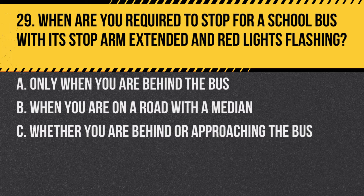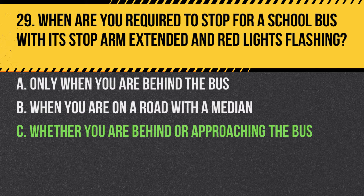Question 29. When are you required to stop for a school bus with its stop arm extended and red lights flashing? a. Only when you are behind the bus. b. When you are on a road with a median. c. Whether you are behind or approaching the bus. Answer: c. Whether you are behind or approaching the bus. This rule is for the safety of children getting on and off the bus.